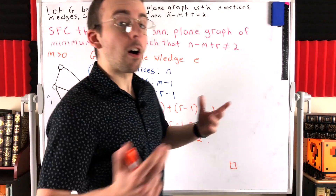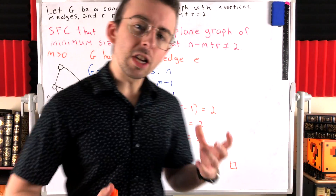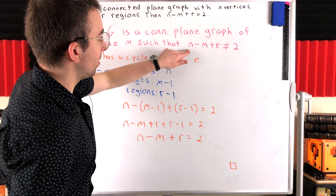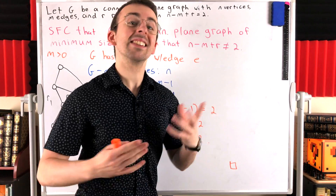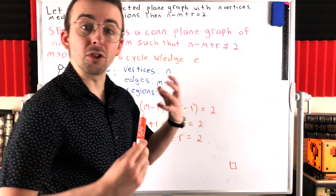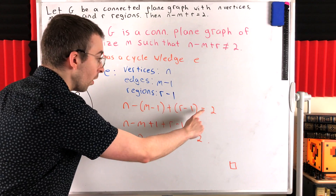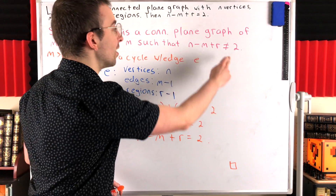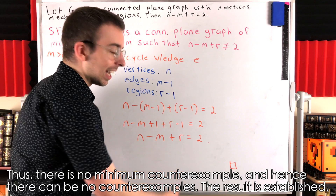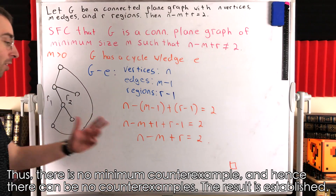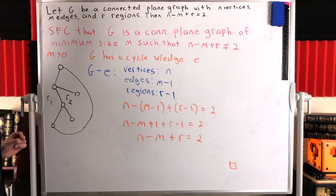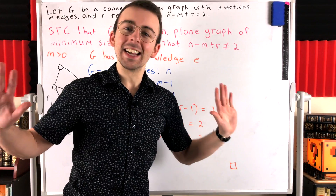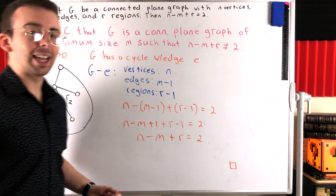We supposed that G was a counterexample with the minimum number of edges, meaning N minus M plus R is not equal to two. But G minus E satisfying the result leads us to N minus M plus R equals two — a direct contradiction. So we have shown in two parts that for any connected plane graph with N vertices, M edges, and R regions, N minus M plus R must equal two. That is the proof of Euler's formula for connected plane graphs.